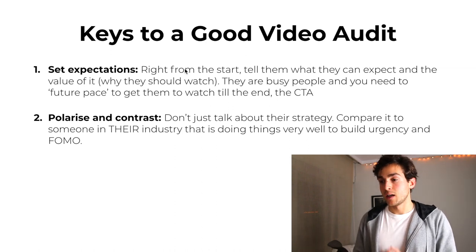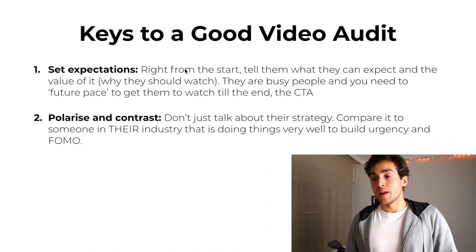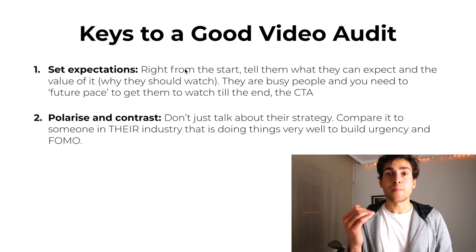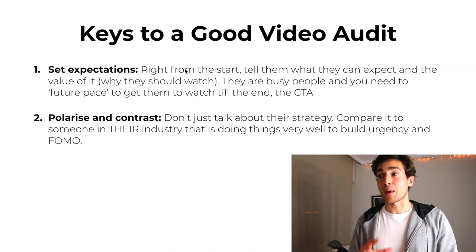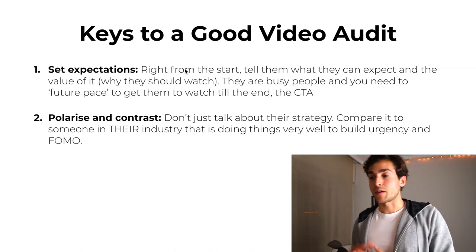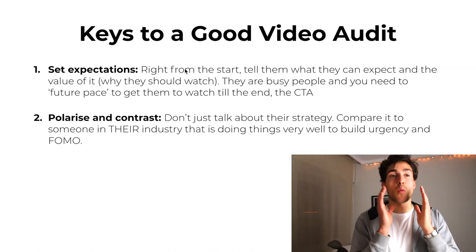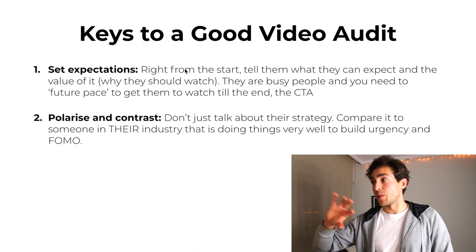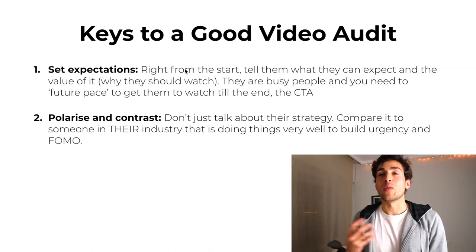The next thing is to polarize and contrast. Don't just talk about their strategy — compare it to someone in their industry who is doing things very well to build urgency and a fear of missing out. A lot of people take a one-dimensional look at the prospect's website and just list what's wrong with it. But what's a lot more valuable for the client is showing that you understand their industry by picking a competitor they likely recognize, and showing them what success looks like. If you can not only tell them what they're lacking but also show them what a competitor is doing, that triggers FOMO and builds urgency.